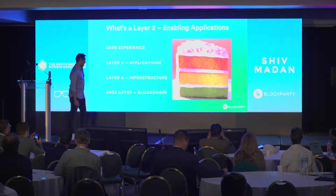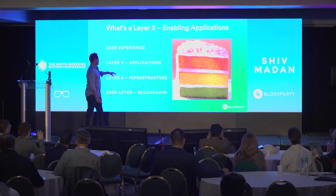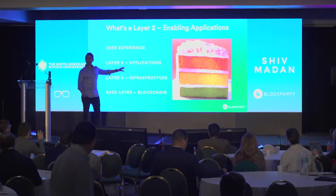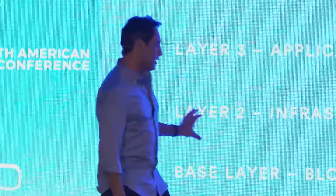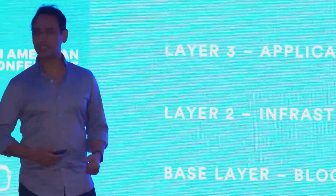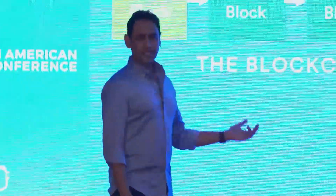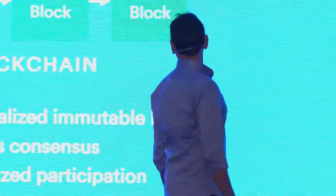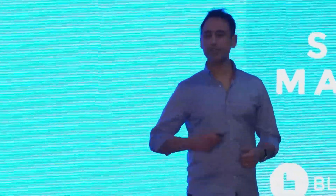So what is a layer two protocol? We have the base layer. We have a lot of applications that came out, and a lot of you might have seen those applications on stage here last year. Now we're building the capability that enables those applications to actually work in real life. Let's start with a blockchain — a decentralized immutable ledger with trusted consensus — and with cryptocurrency we have incentivized participation.